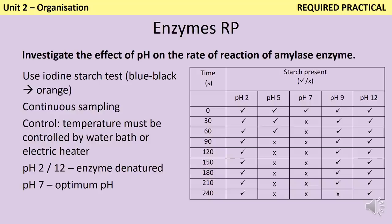As part of this required practical, control variables include temperature. A control variable must be actively controlled — it's not sufficient to say the experiment is done at room temperature. Temperature must be controlled by keeping the tubes in a water bath or using an electric heater to ensure it is exactly the same in every repeat.